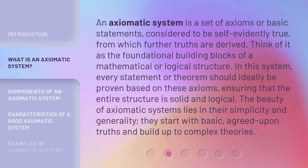An axiomatic system is a set of axioms, or basic statements, considered to be self-evidently true, from which further truths are derived. Think of it as the foundational building blocks of a mathematical or logical structure. In this system, every statement or theorem should ideally be proven based on these axioms, ensuring that the entire structure is solid and logical. The beauty of axiomatic systems lies in their simplicity and generality — they start with basic, agreed-upon truths and build up to complex theories.